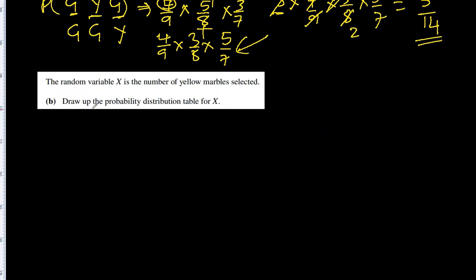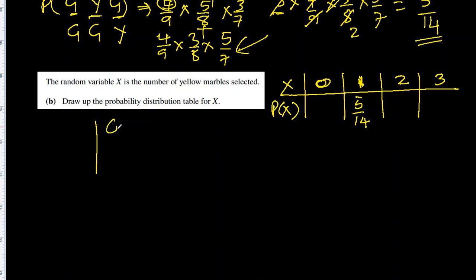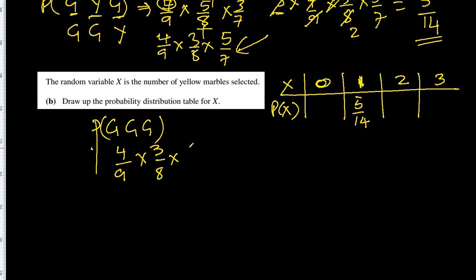The random variable X is the number of yellow marbles selected. Draw the probability distribution table for X. X can be 0, 1, 2, or 3. We already know P(X=1) = 5/14. For P(X=0), all three must be green: 4/9 times 3/8 times 2/7 = 24/504.